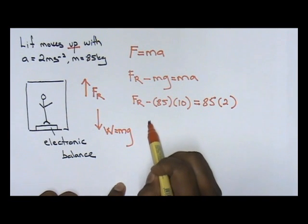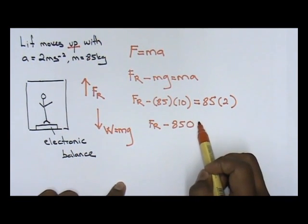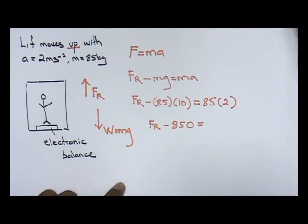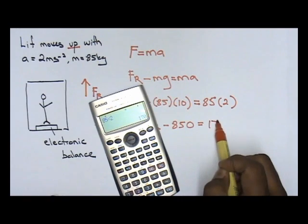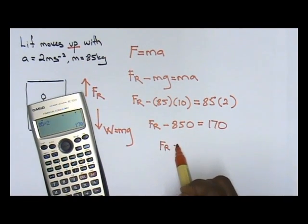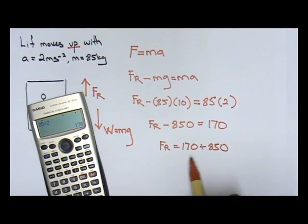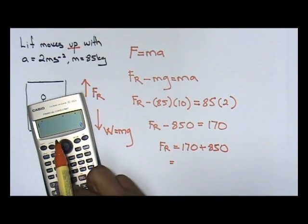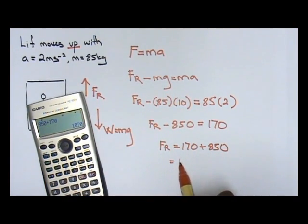Your acceleration given to you is 2. Okay? Now, let's do this question. So FR minus 850 Newtons equals to over here, 85 times 2, 170. So your FR equals to 170 plus 850. So 850 plus over here 170. You'll get 1020 Newtons.